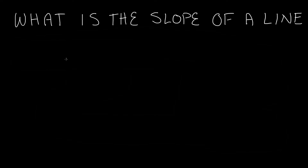Hey everybody, this is Paul, welcome to lesson 62 in the Intermediate Algebra series. In this tutorial I'm going to explain the concept behind what a slope of a line is. In this video I'm just going to explain what this word slope means. In the next tutorial I'll start to explain the math behind it, but I'm not going to do any math in this video — I just want you guys to understand some of the basic concepts of what a slope is.